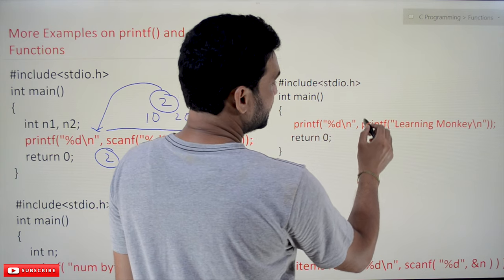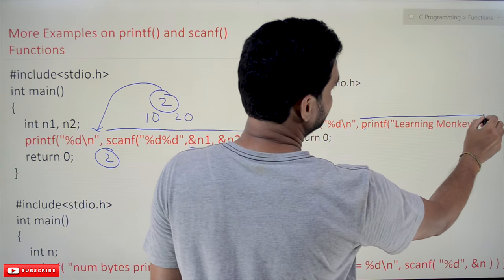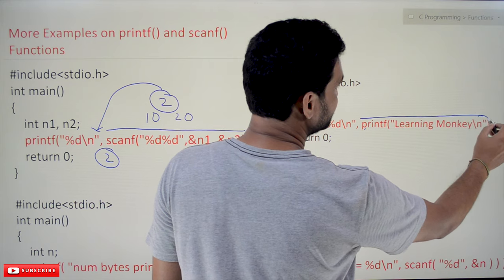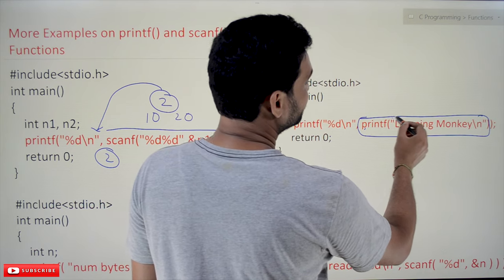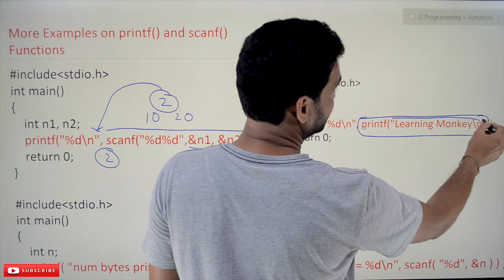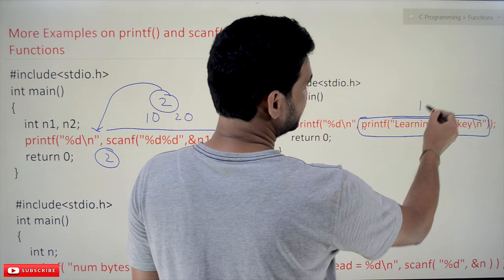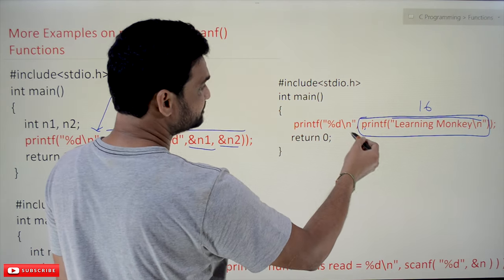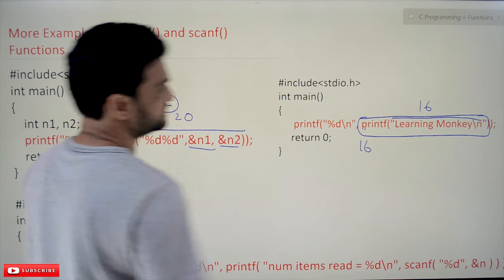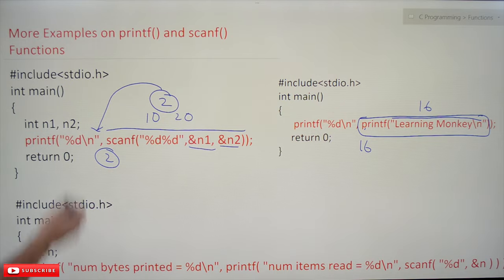Similarly, if you take this printf percentage d, in that we are having another printf. So what is the return value of a printf statement? The return value of the printf statement is the number of characters that it has printed. So total it is 16 characters, 16 characters.